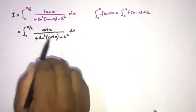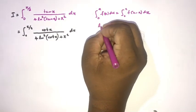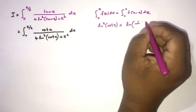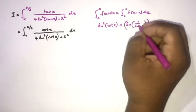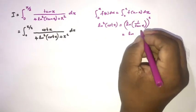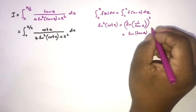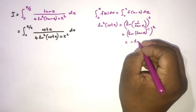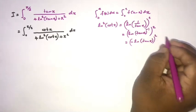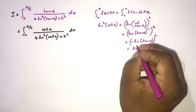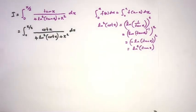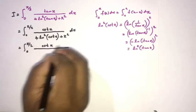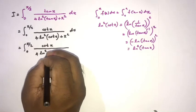Now we simplify ln²(cot x). Since cot(x) = 1/tan(x) = tan(x)^(−1), we get ln(tan(x)^(−1)) = −ln(tan x). Squaring gives [−ln(tan x)]² = ln²(tan x). So the transformed integral becomes the integral from 0 to π/2 of cot(x) over [4·ln²(tan x) + π²] dx, which also equals I.